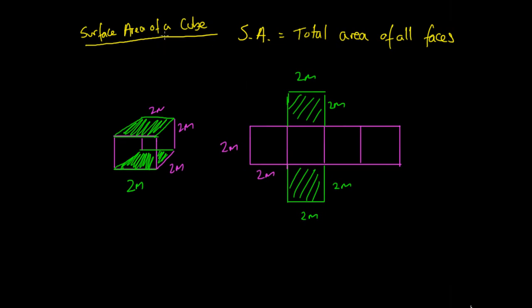To work out the total surface area of a cube, we basically just have six separate squares and all we need to do is work out the area of these six separate squares and then add them together. We have a 2-metre side here and a 2-metre side here. We can work out the area of this first square — area being the amount of space it covers. Because this is a square, we can use length squared, or length times length. So it's just going to be 2 times 2, which gives us 4 metres squared.